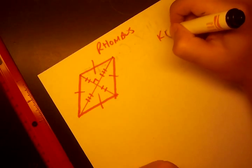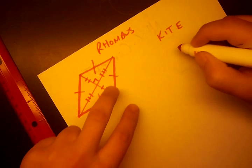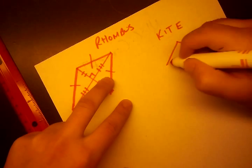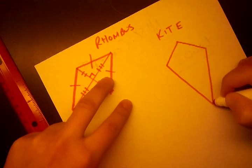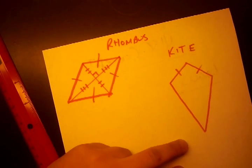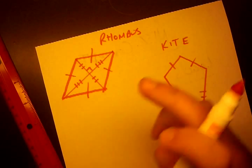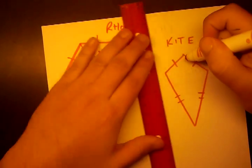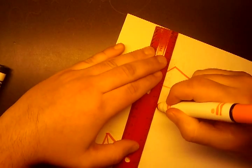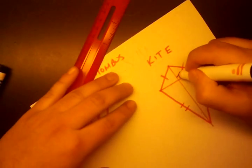The next one we'll talk about is called the kite. A kite looks something like this. And it's defined by these two are the same length, and these two are the same length. And another interesting property of a kite is first that when we draw our diagonals, they'll also intersect in right angles.